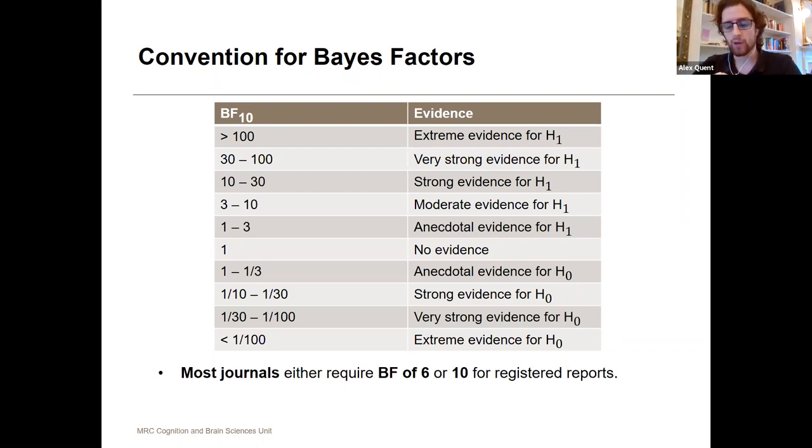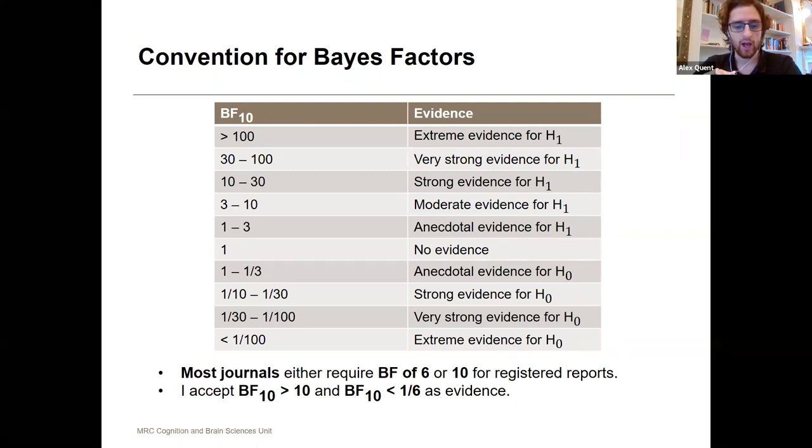For my simulations that I'm going to present in a second, I'm going to accept a Bayes factor of over 10 for evidence for my alternative hypothesis and a Bayes factor of 1/6 as evidence for the null hypothesis. The only reason for having this asymmetric cutoff is that it's much more difficult to find strong evidence for a point hypothesis as a null than for an alternative in most cases.